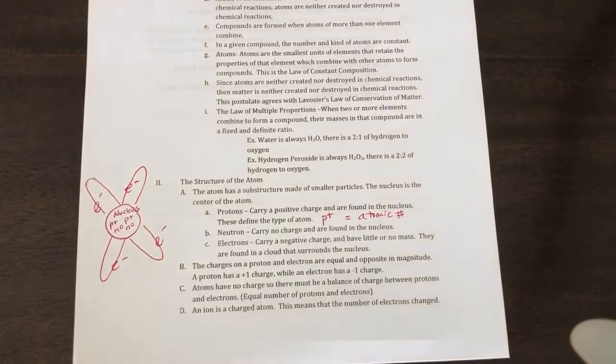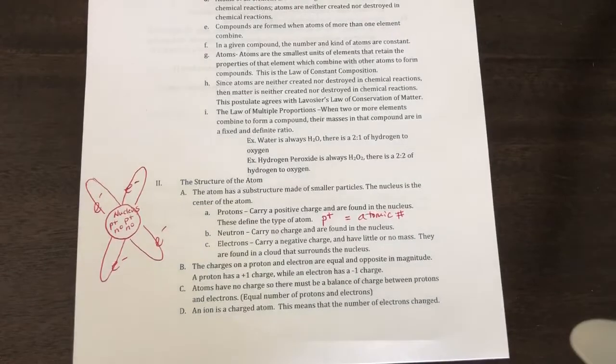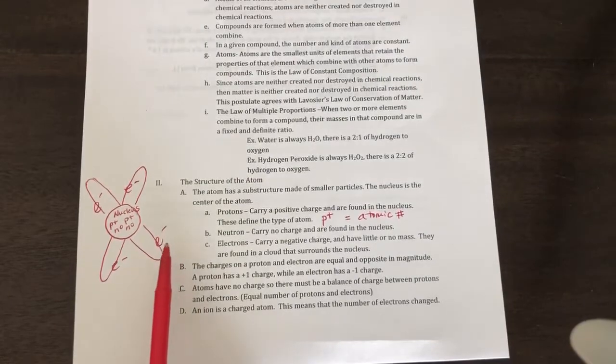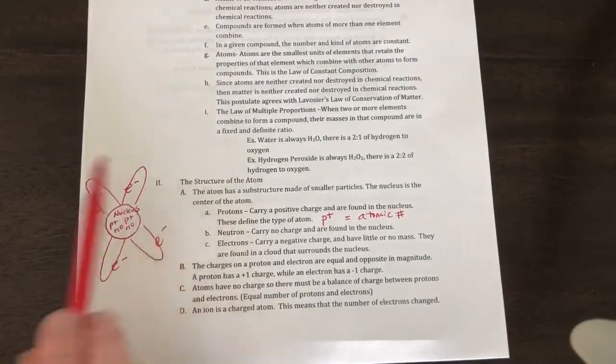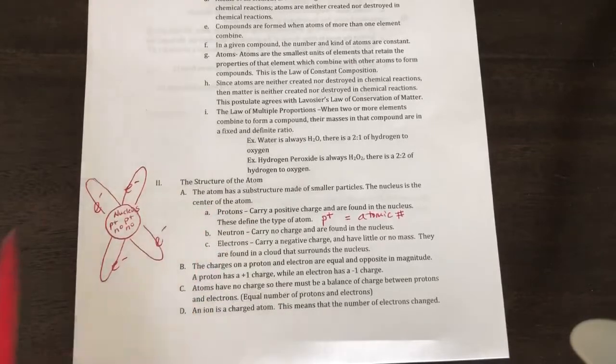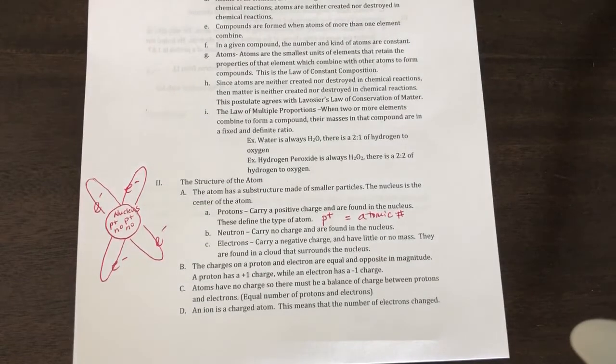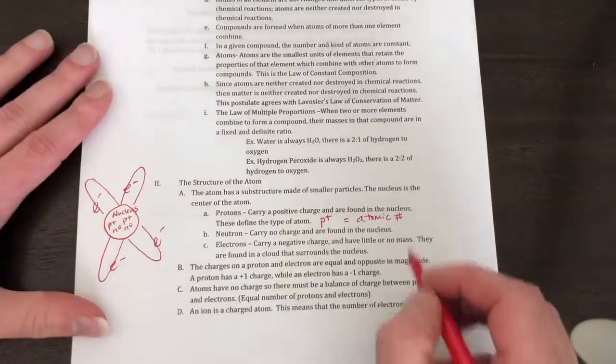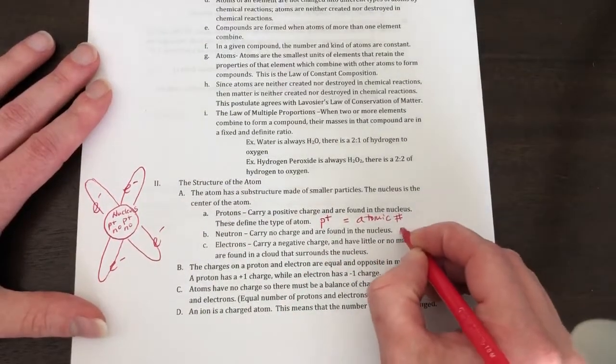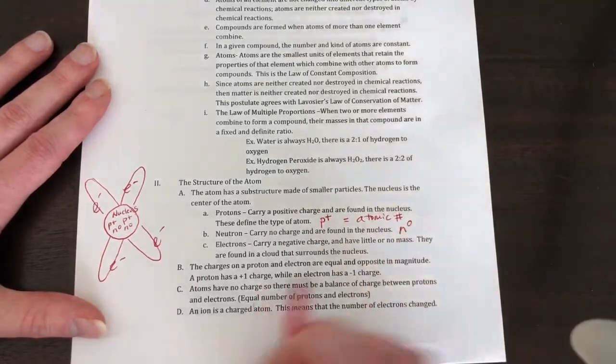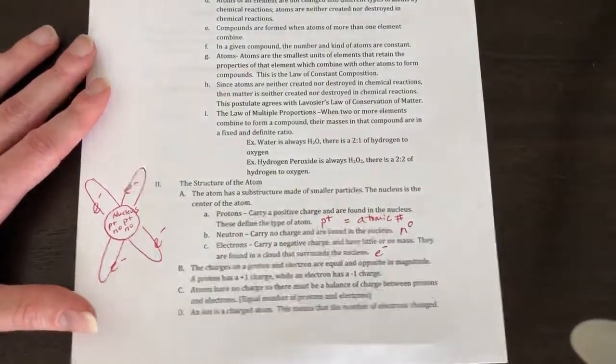Back in the 1800s, when they were first discovering the atom, they thought that they had a Bohr model. I don't know if you've ever seen that before, but everything was in circles. The electrons went in perfect circles, and then you get on to people like Heisenberg, and then they noticed that electrons were found in a cloud that surrounds the nucleus. The symbol for neutrons is going to be n0, and the symbol for an electron is going to be e-.